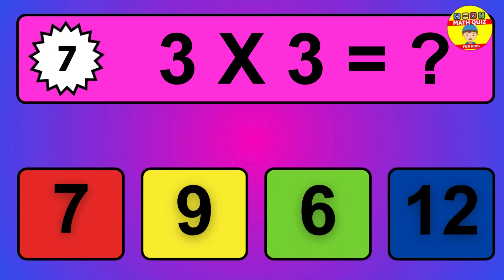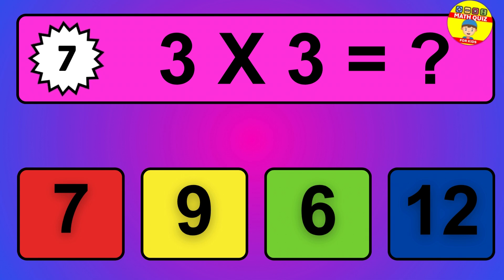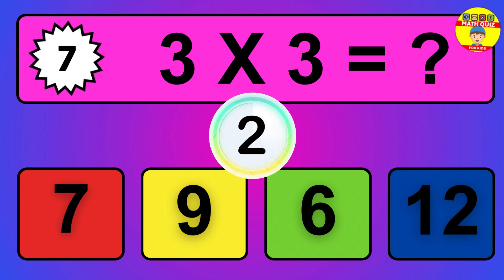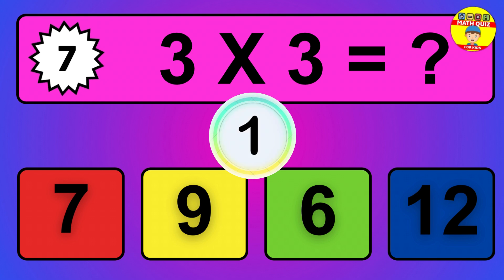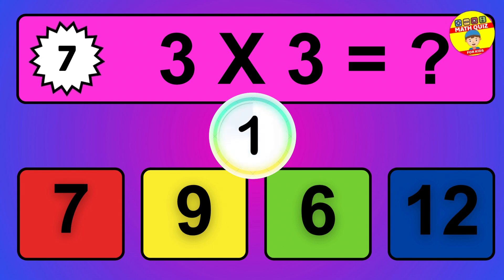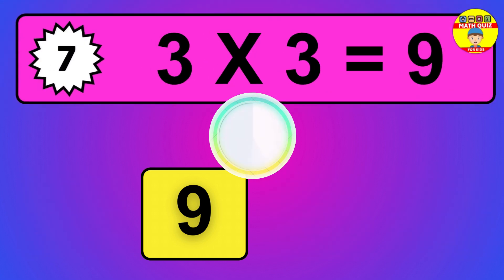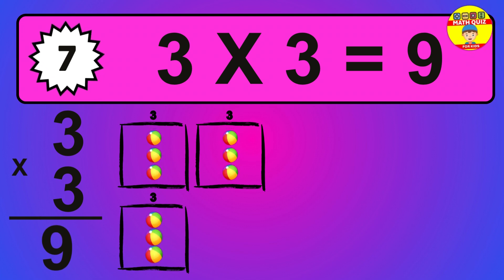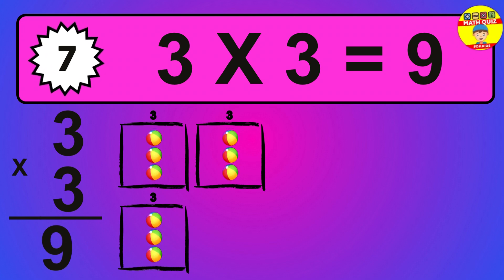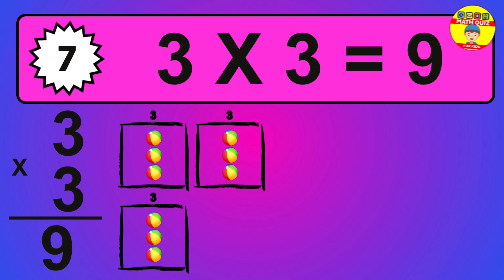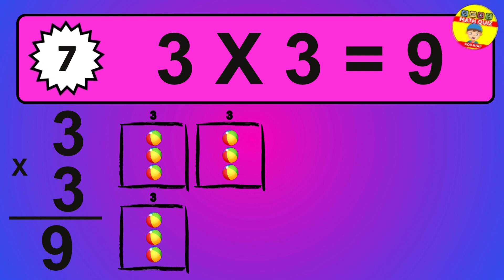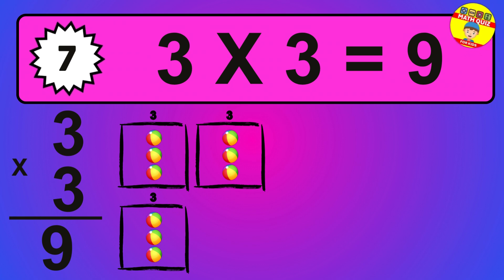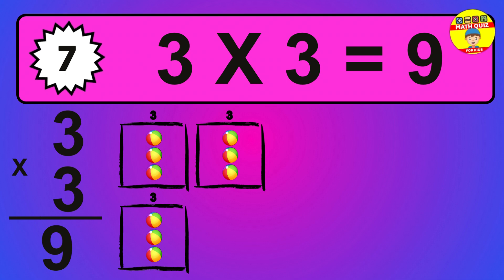Question 7. 3 times 3 equals what? So the answer is 3 times 3 is 9. To calculate, we have 3 groups with 3 balls each one. So how many balls do we have? 9 balls.